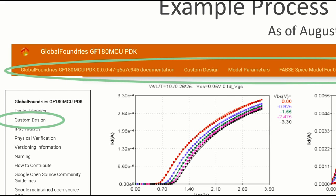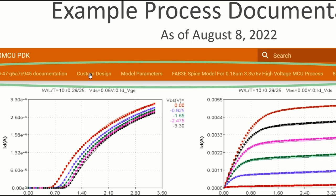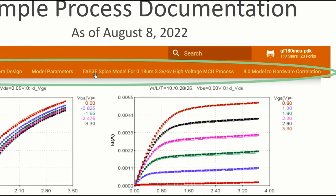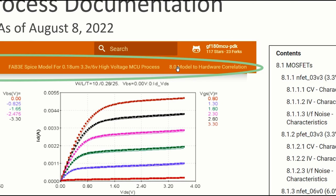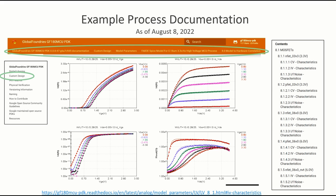One thing that initially annoyed me when using this online menu system was that when I clicked on something like custom design, the URL didn't say 'custom design' — it said something else and I quickly got lost. But it turns out there is a path breadcrumb at the top that I didn't see initially. So you can see you're not at the top level — you're deep below it, having clicked through custom design, then model parameters, then FAB 3E SPICE model for 0.18, then 8.0 model-to-hardware correlation. There's clearly a lot of depth to these menus, but I've put the direct link at the bottom of each slide.